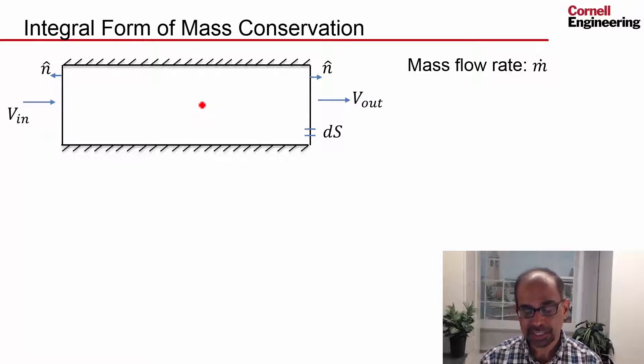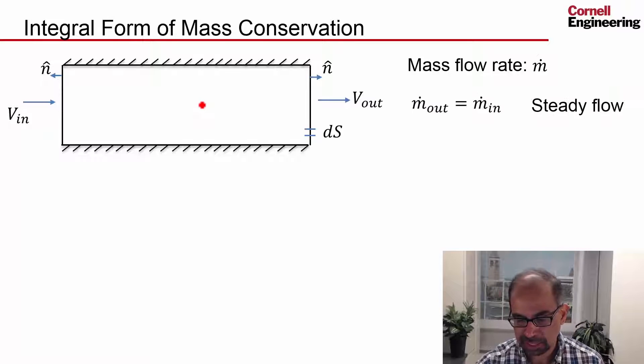And if we write that in terms of the mass flow rates we can say that the mass flow rate out should be equal to the mass flow rate coming in, and that involves the assumption that the flow is steady.